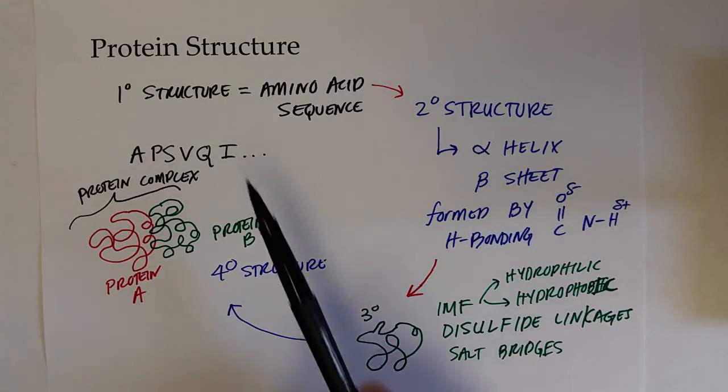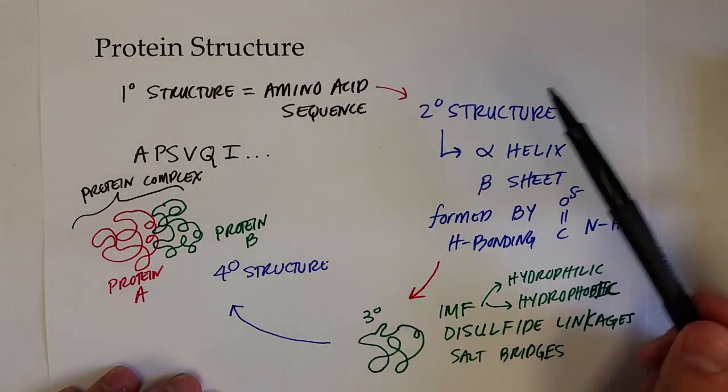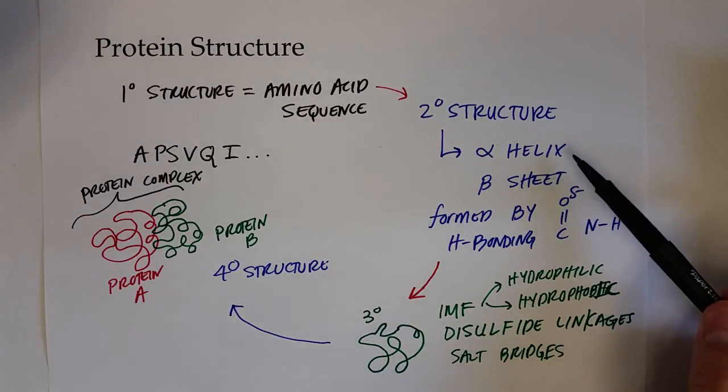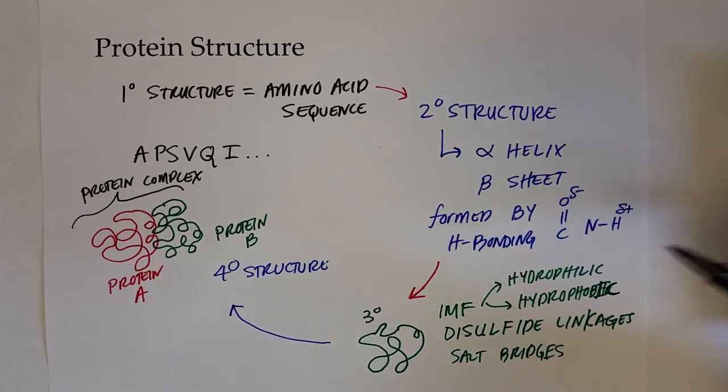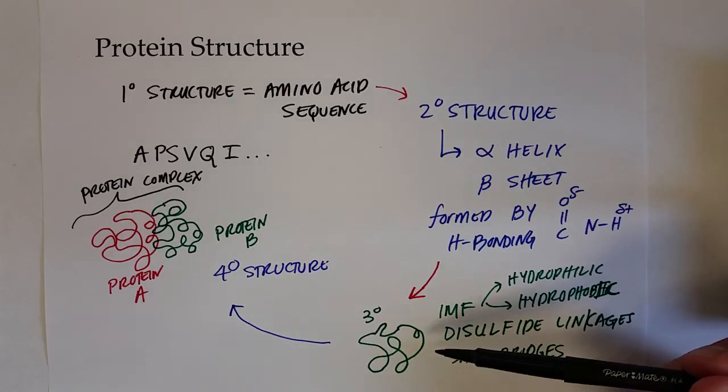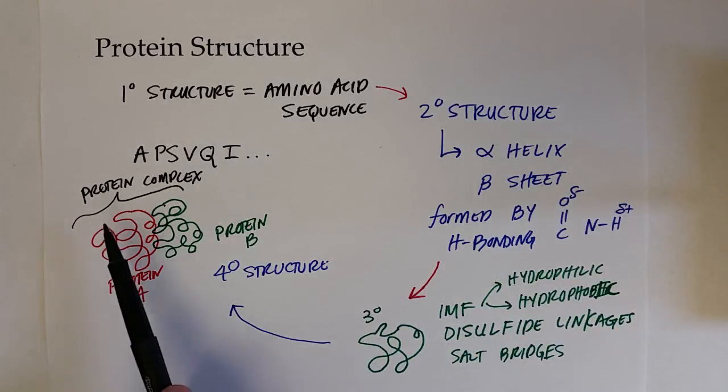Okay, so to review: the primary structure is the amino acid sequence of a protein, which then forms alpha helixes and beta sheets by hydrogen bonding. Intermolecular forces, disulfide linkages, and salt bridges lead to the overall three-dimensional structure or tertiary structure. And then two or more proteins can form complexes in what are known as quaternary structures of the biologically active protein.